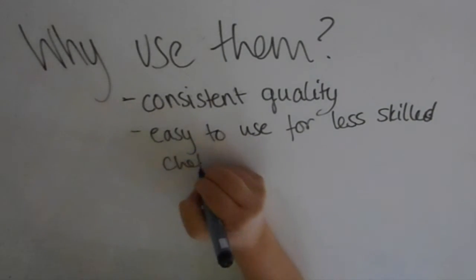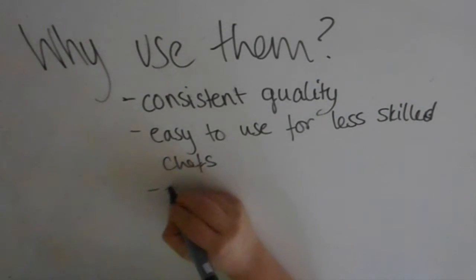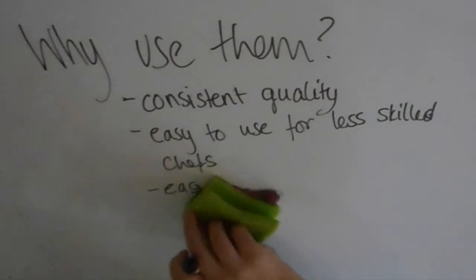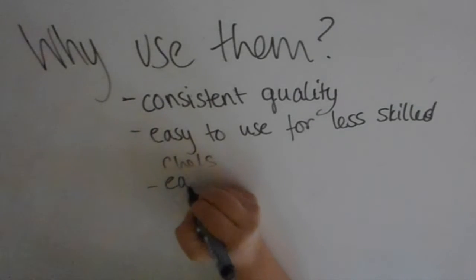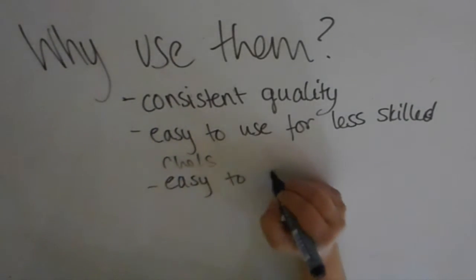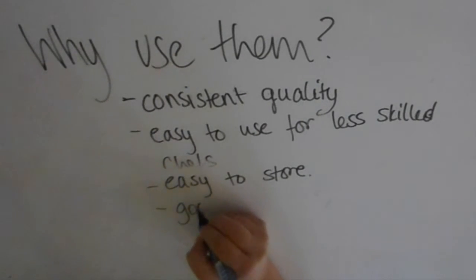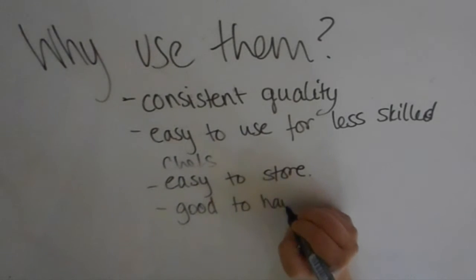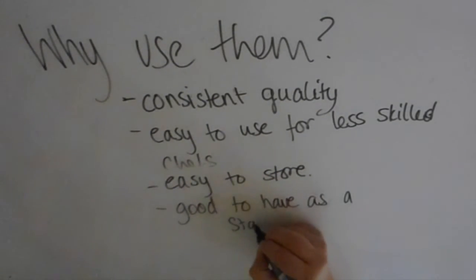If you've got a shift where your commie chef is on duty and in charge of a section, it's good that he can use convenience products so it's not pushing his skills if he's not confident. They're also easy to store because they're often in packets - stackable. And it's good to have them just in case of emergency so that if anything goes wrong you can still provide meals for your customers.